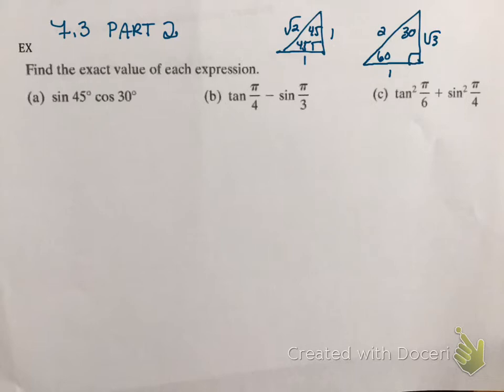So part A asks us to find sine of 45 degrees times cosine of 30 degrees. Just as a quick reminder, we have SOHCAHTOA. Sine is defined as opposite over hypotenuse, so sine of 45 degrees is opposite, which is 1, over radical 2, which equals radical 2 over 2. And cosine of 30 degrees, cosine is defined as adjacent over hypotenuse. So the adjacent side when we look at 30 degrees is radical 3 over 2.